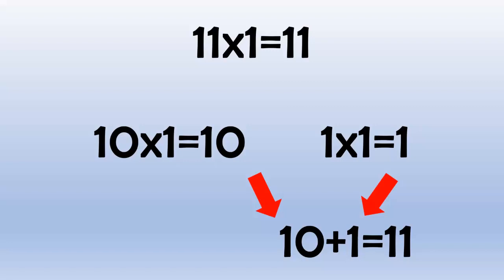11 times 10 equals 110, because 10 times 10 equals 100, and 1 times 10 equals 10, and 100 plus 10 equals 110. 11 times 11 equals 121, because 10 times 11 equals 110. 11 times 12 equals 132, because 10 times 12 equals 120, and 120 plus 12 equals 132.